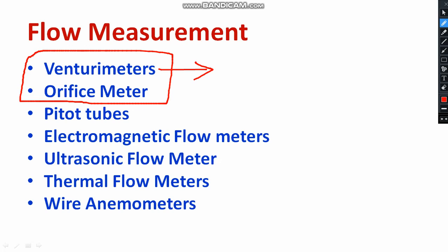Venturi meter is an instrument used to measure the discharge. You can calculate discharge by using a venturi meter, along with a manometer. Venturi meter works based on the principle of Bernoulli's theorem and equations of continuity. These are the two working principles of venturi meter.